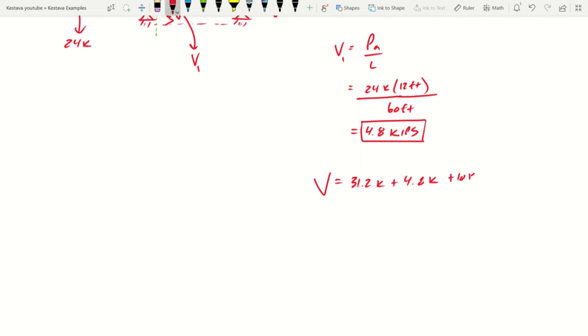That means we just need to add an additional 10 kips to our shear value already. So if we add the 10 kips, the sum is going to equal 46 kips. And that is going to be our answer.